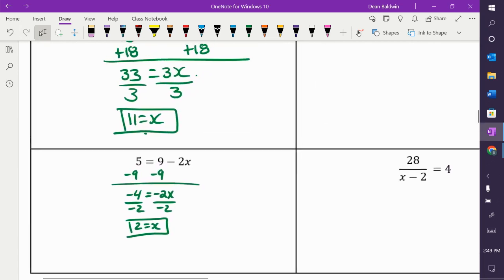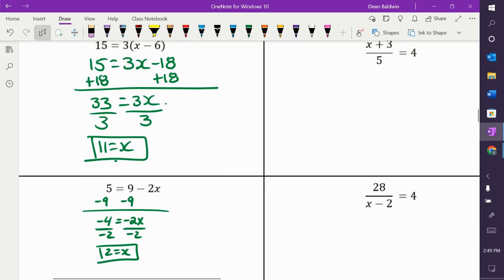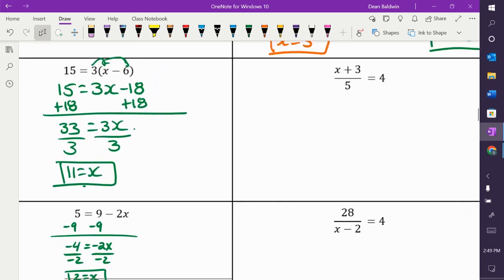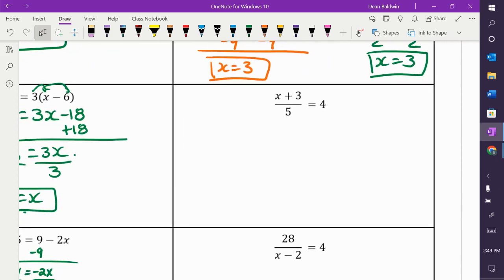Now, these ugly fraction ones. Okay. X plus three over five is equal to four. You have two choices. One is way easier than the other one. The easy one, okay, is to get rid of this five here. All right. So, what does this mean? X plus three over five. What operation is that? That's division. So, how do I get rid of the five? You multiply by five.